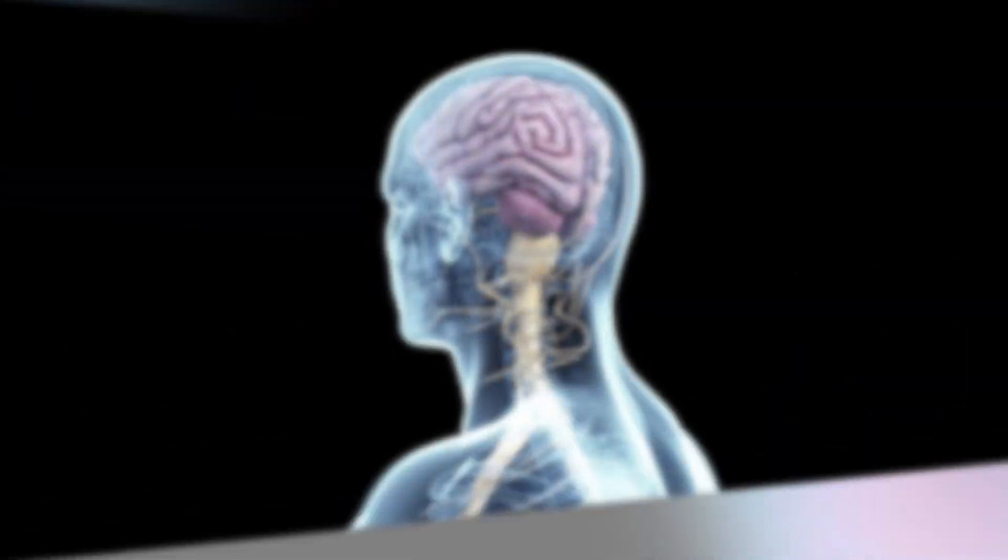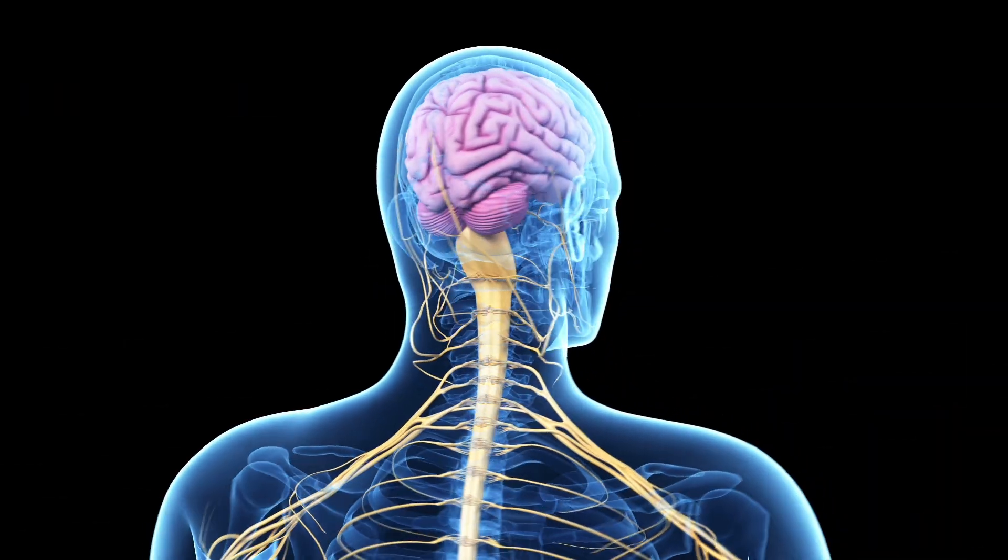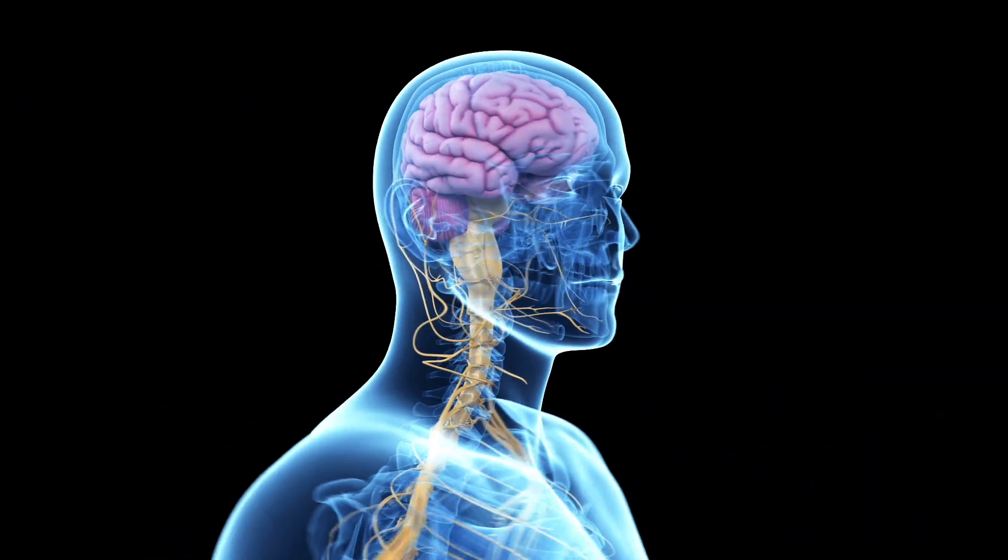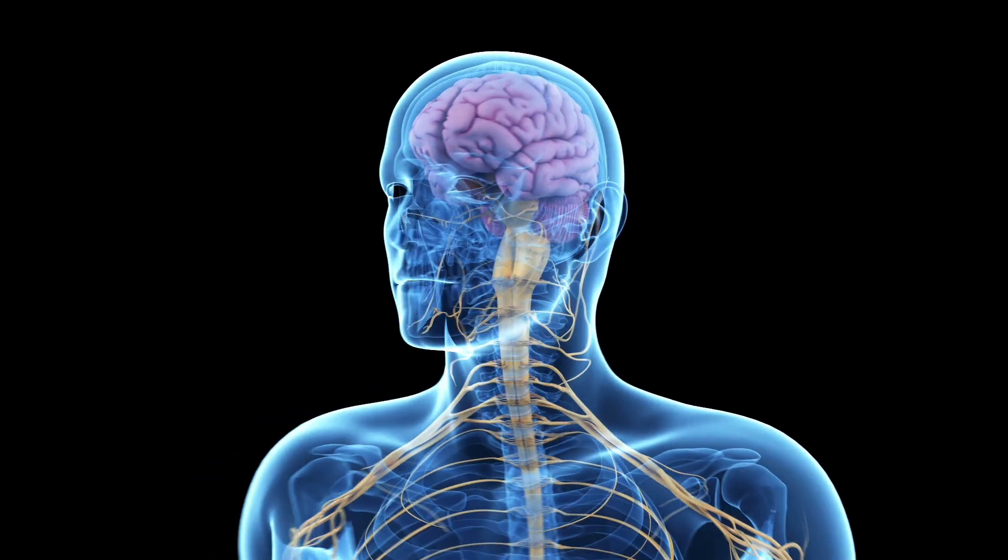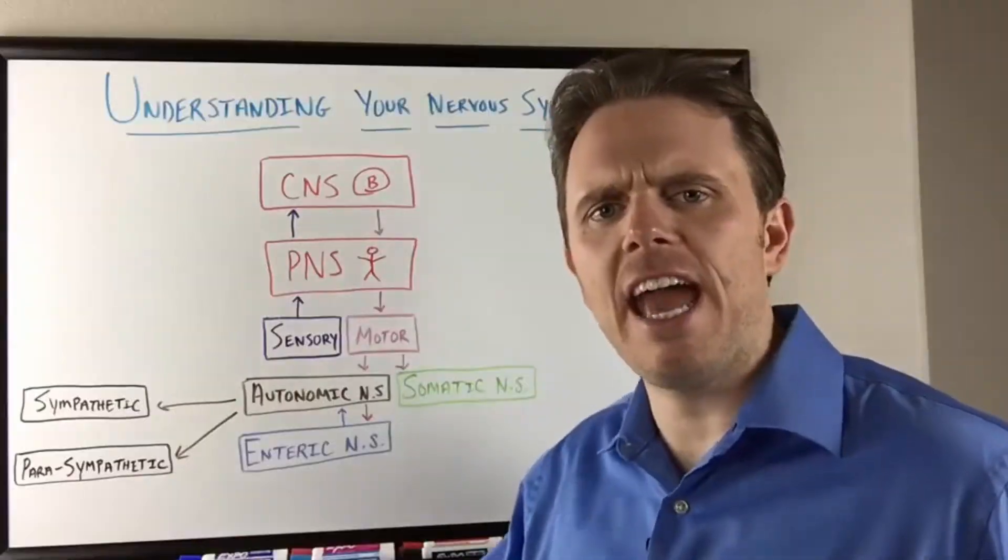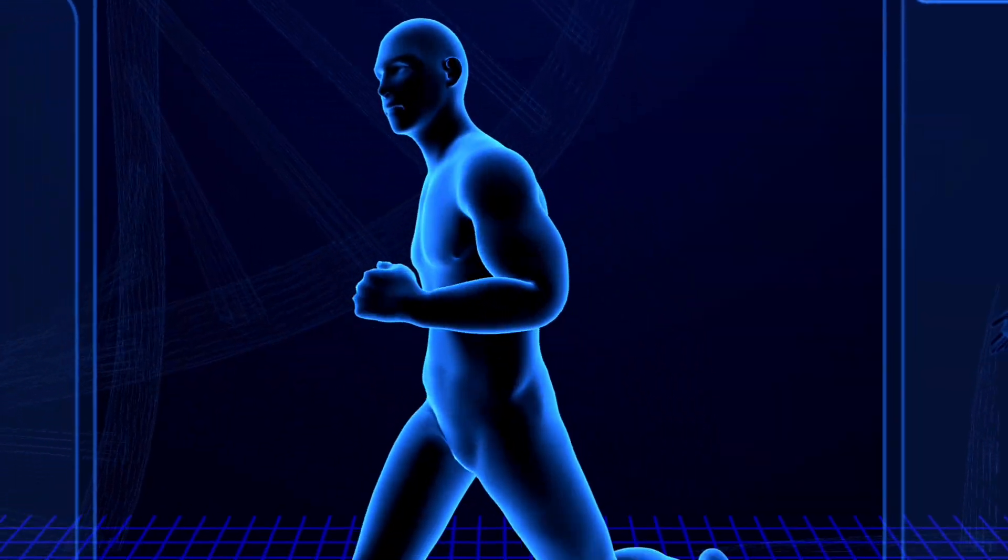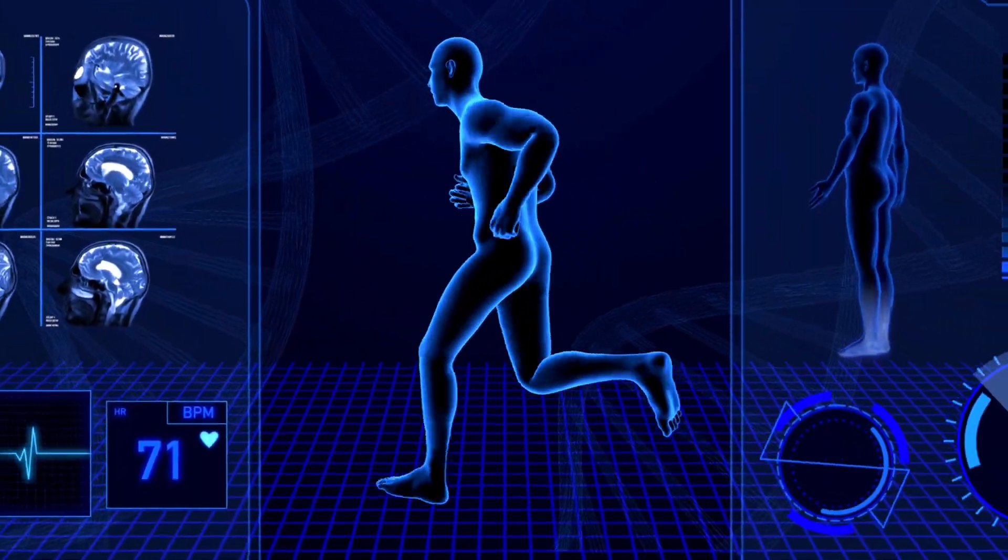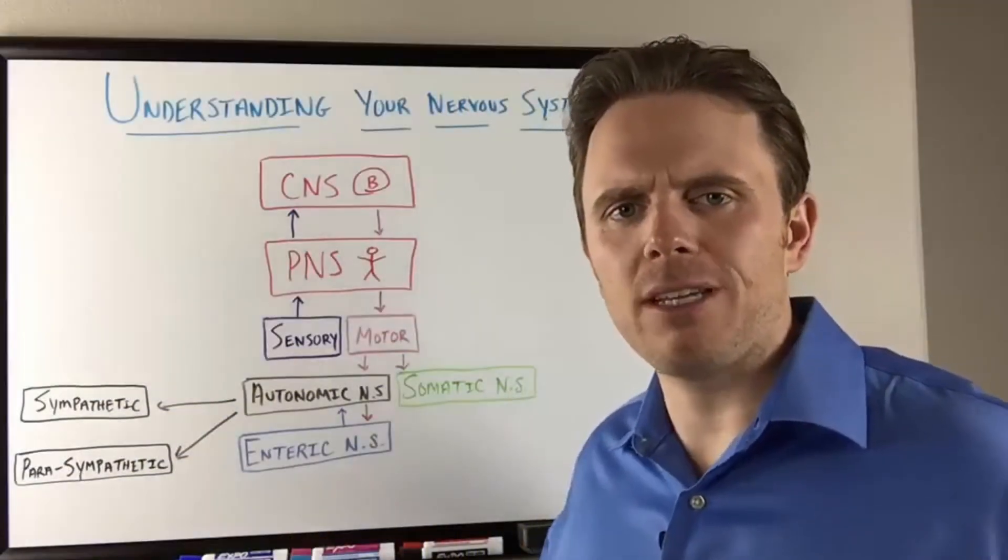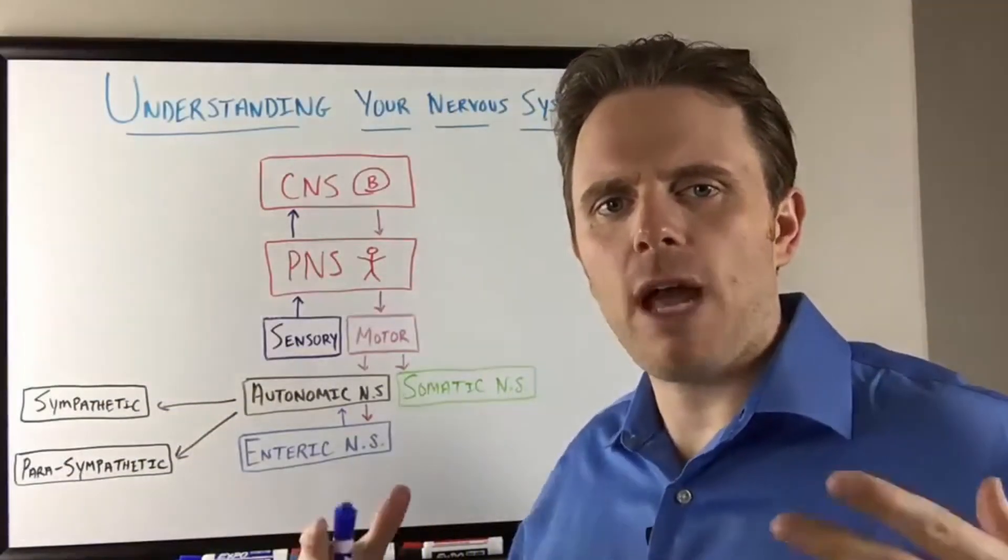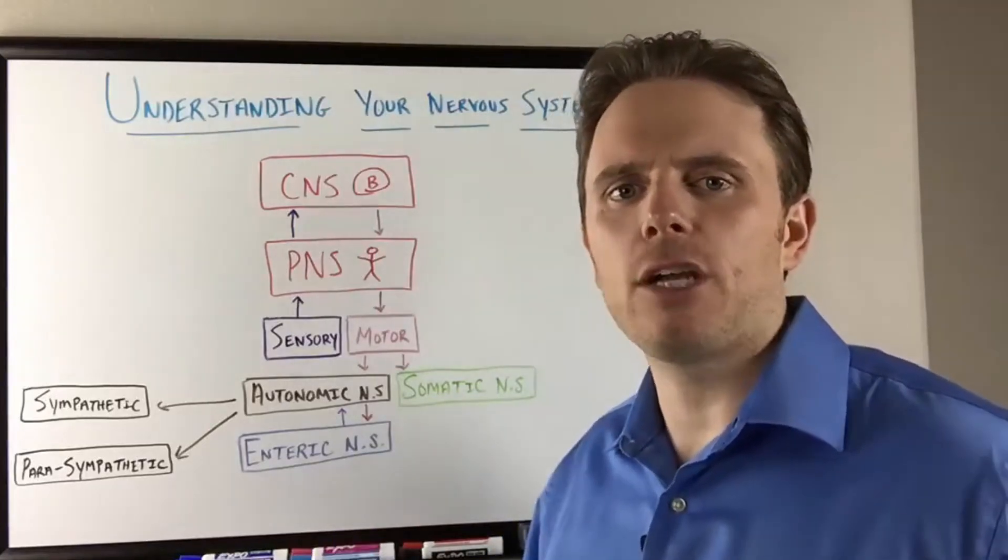Our nervous system is really the control center of the body. Lots of different interwoven pathways that connect to our hormonal system. It helps us deal with stress, create energy, helps our muscles move and perform. I want to break it down in a way where people can understand it and take away some key action points.